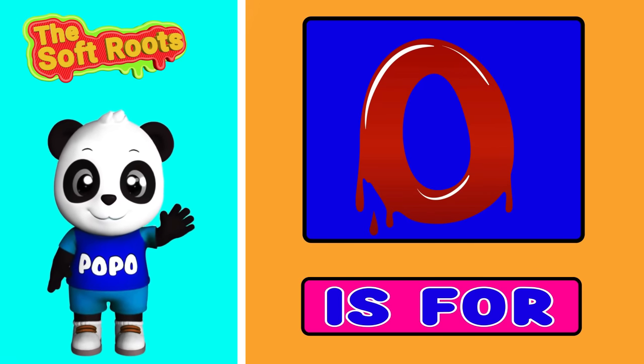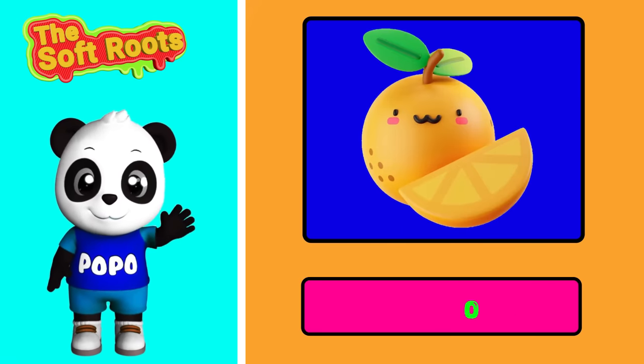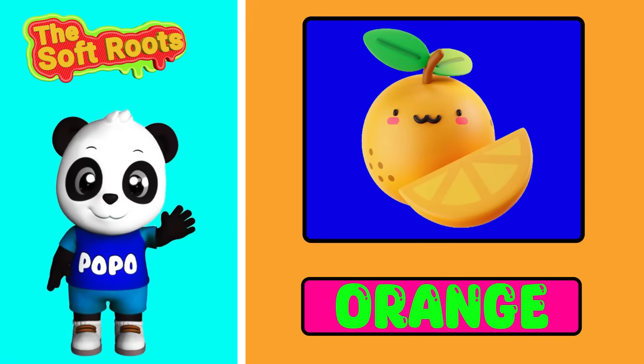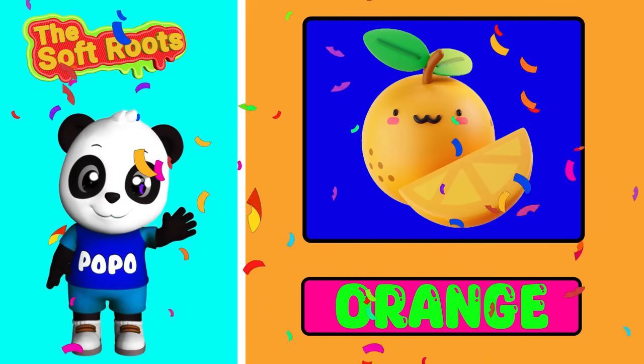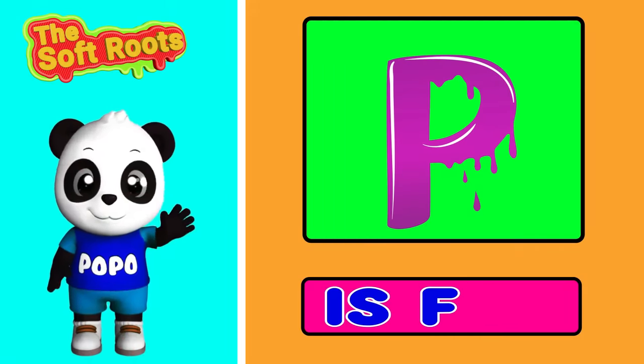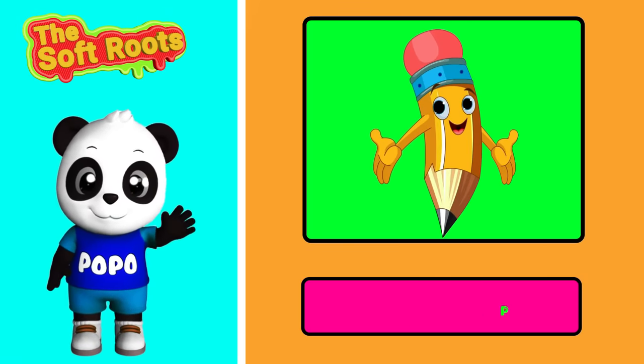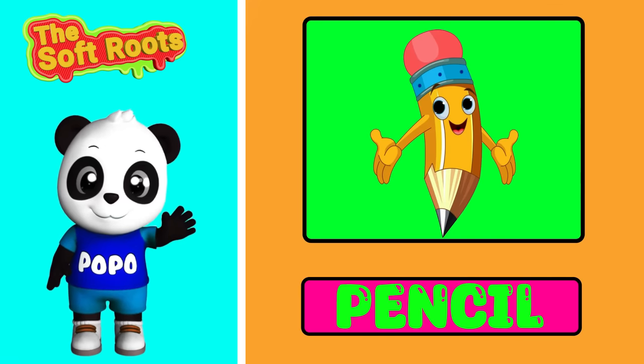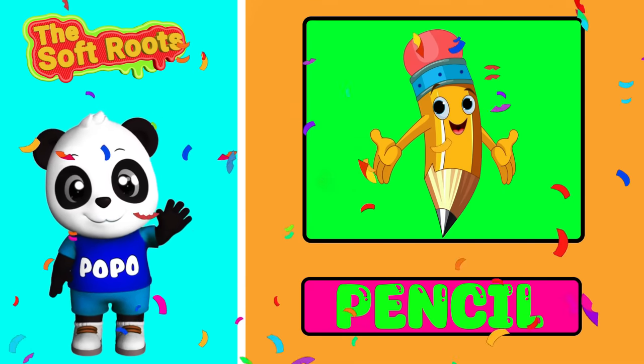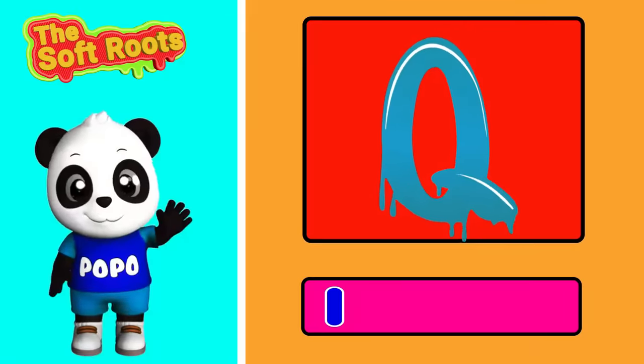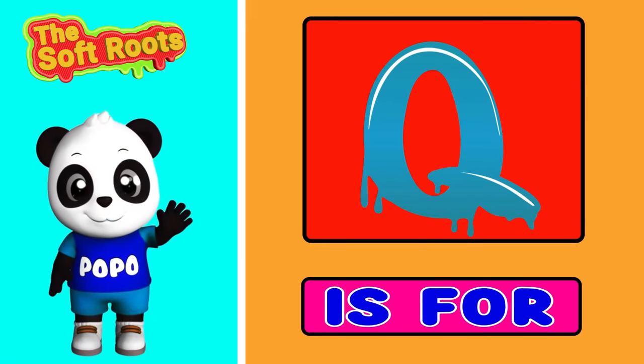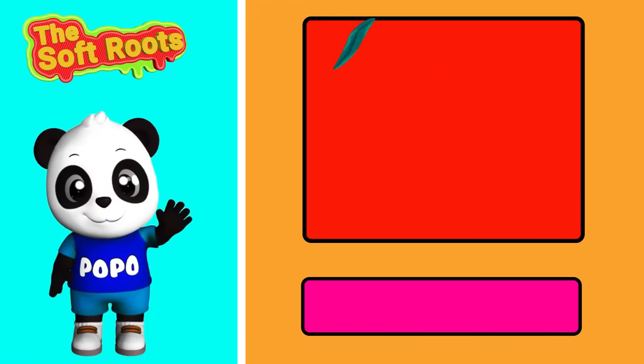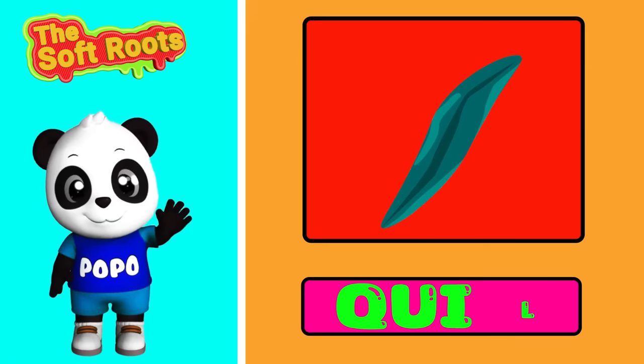O is for Orange. P is for Pencil. Q is for Quill.